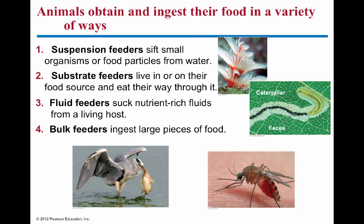Fluid feeders subsist on nutrients they get from liquids. A female mosquito feeding on blood is one example. Male mosquitoes, many other insects, and hummingbirds are also fluid feeders — they drink nectar from flowers.